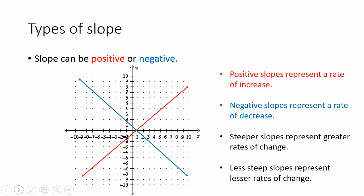There are four types of slope. The first two are positive and negative. The red line is positive — it represents a rate of increase. As you move from left to right, you're going uphill. A negative slope represents a rate of decrease; as you move left to right, the line is going downhill. Steeper slopes represent greater rates of change — the closer a line is to vertical, the greater the rate of change.